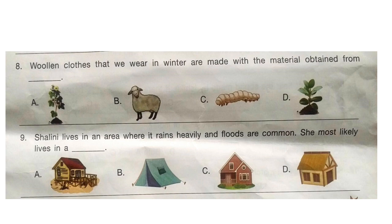Question 8: Woolen clothes that we wear in winter are made with the material obtained from dash. Look at the options and select the answer. Question 9: Shalini lives in an area where it rains heavily and floods are common. She most likely lives in a dash. You can also write down your answer in the comment section. The correct answer is option A — stilt house.